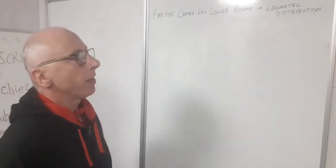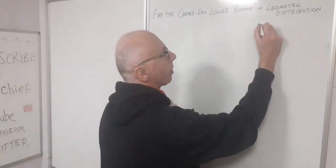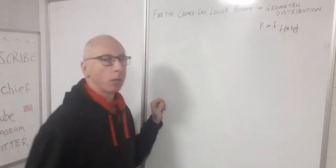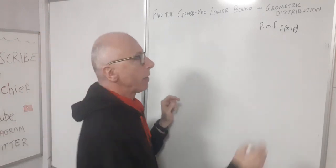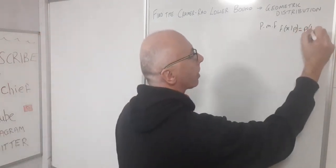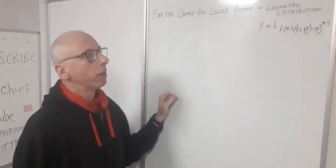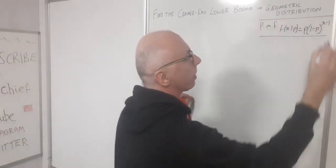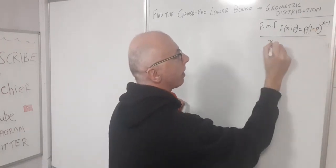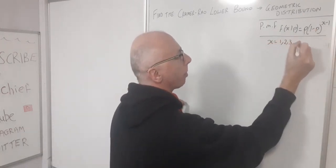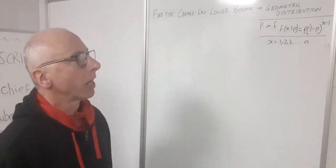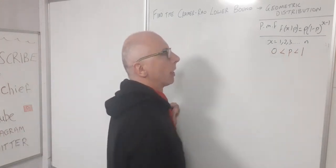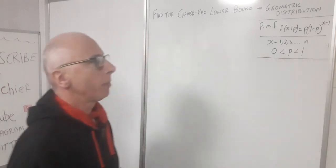First, we'll look at the geometric distribution. This is a discrete distribution with a probability mass function f of x given p, where p is the probability and x is our random variable, that is p times (1 minus p) to the power of x minus 1. Because it's discrete, x can be 1, 2, 3, and so on up to n. And p, because it's a probability, is between zero and one.